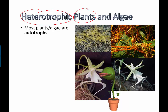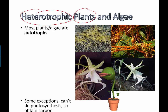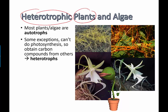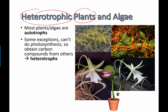So most plants and algae are autotrophic, or autotrophs — they're able to make their own food using photosynthesis. There are some exceptions, and they're considered exceptions because they don't do the normal autotrophic thing. They actually get their nutrition and energy the same way that we do.